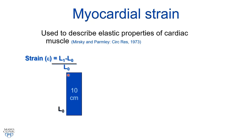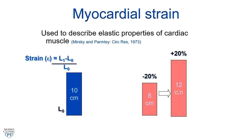This formula can be used to define longitudinal strain. If an object has an original length of 10 centimeters and shortens to 8 centimeters, that's 8 minus 10 divided by 10 — a minus 20% change in length. If it gets longer from 10 to 12 centimeters, that's a positive 20% change or strain. No change in length means no strain.